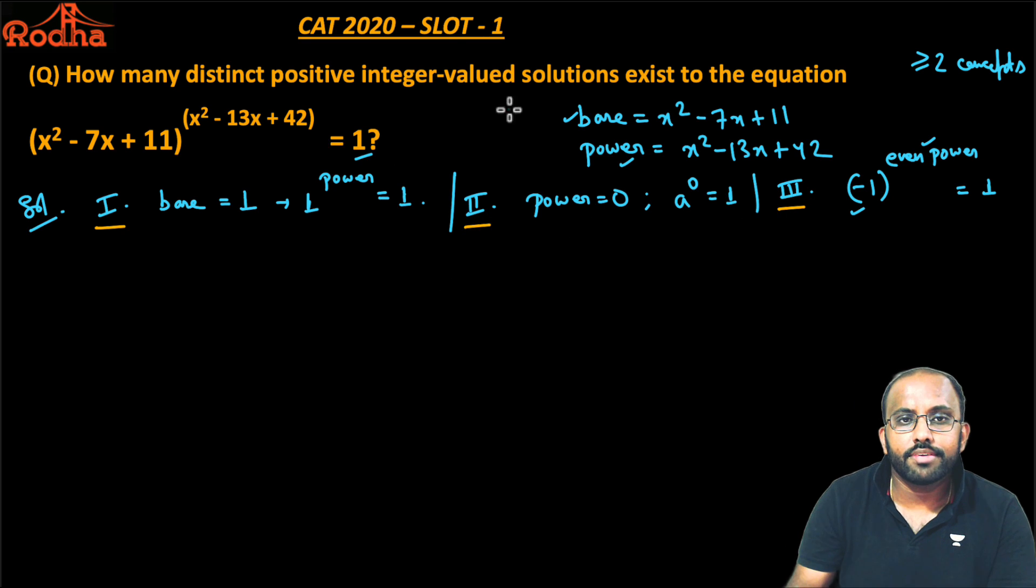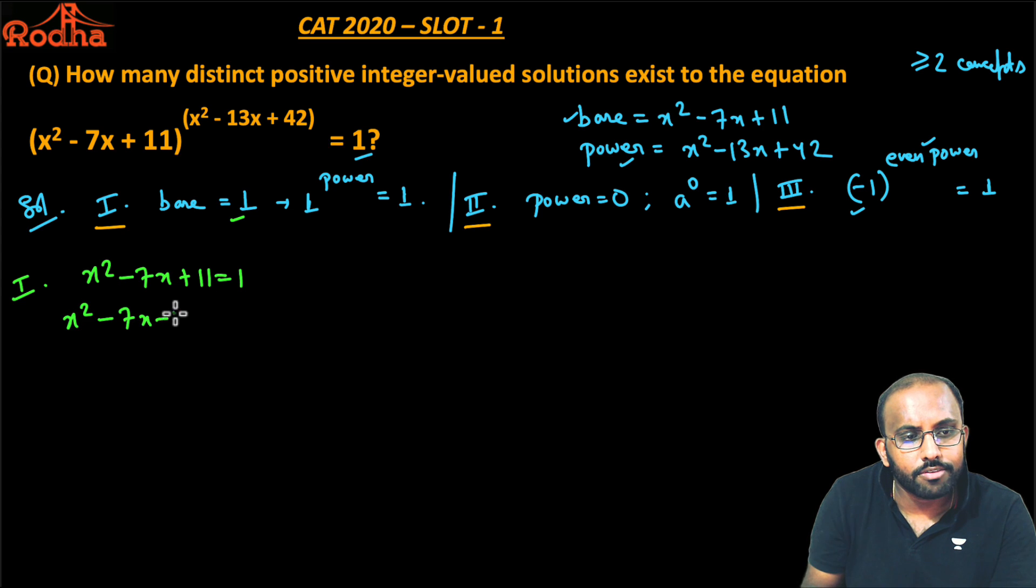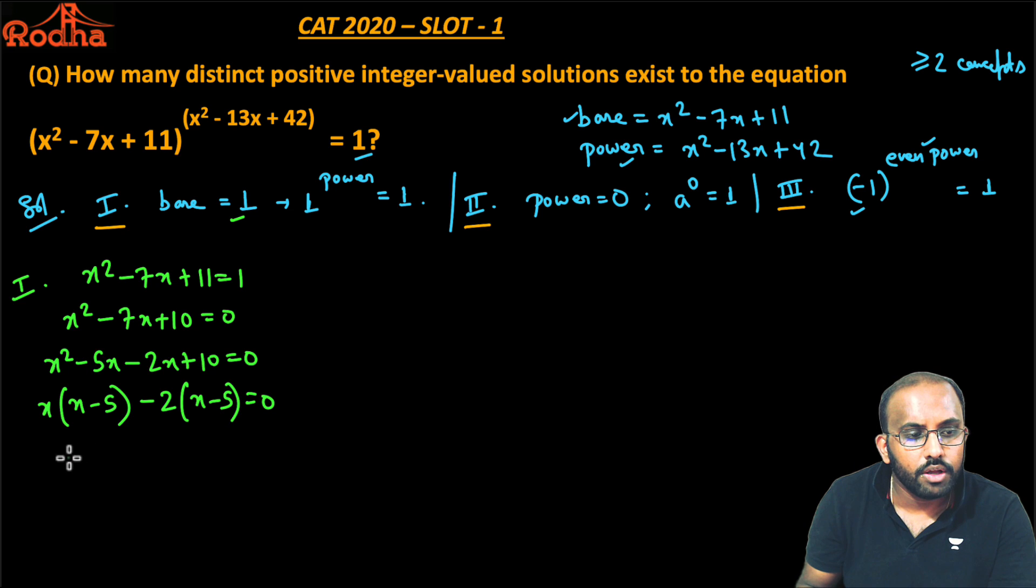Let's take them one by one. In the first case, make base equal to 1. So x² - 7x + 11 = 1, which gives x² - 7x + 10 = 0. Factorizing: x² - 5x - 2x + 10 = 0, so (x - 5)(x - 2) = 0. Therefore x = 2 or 5. At x = 2 or 5, the base equals 1, so I can accept both values.